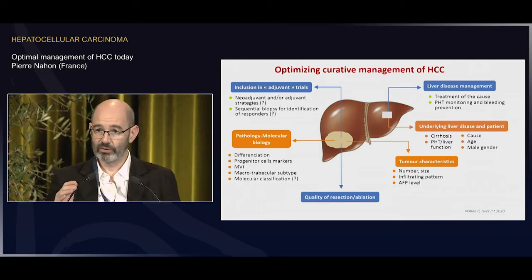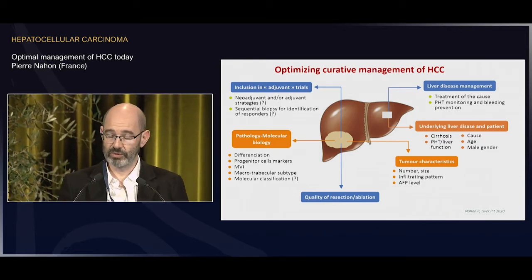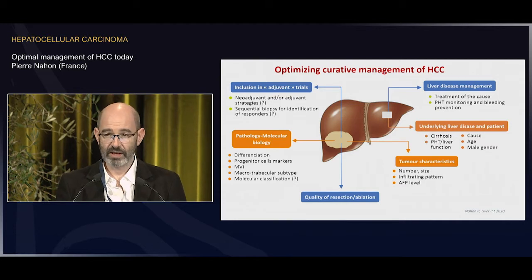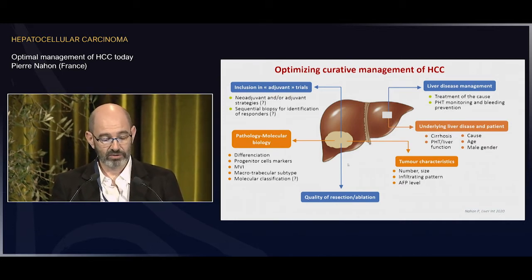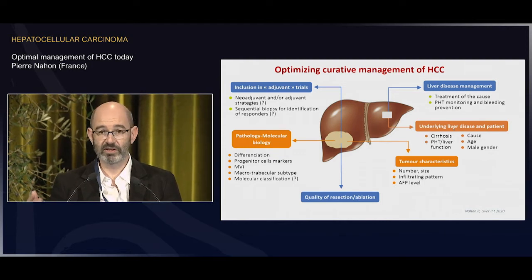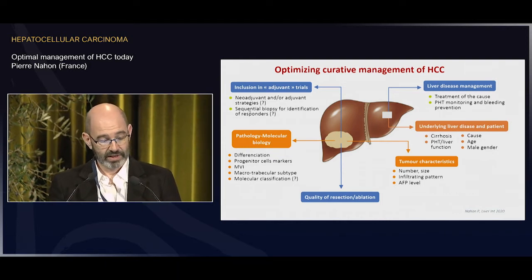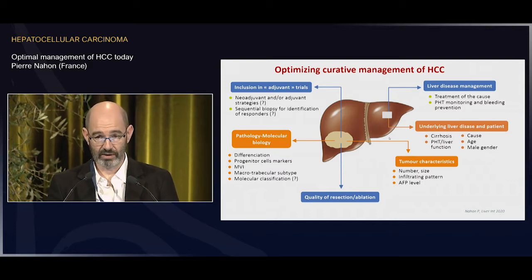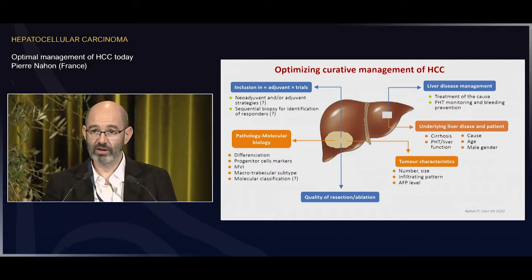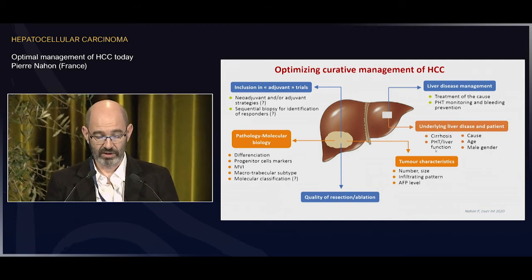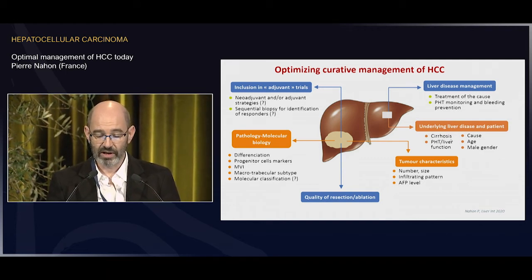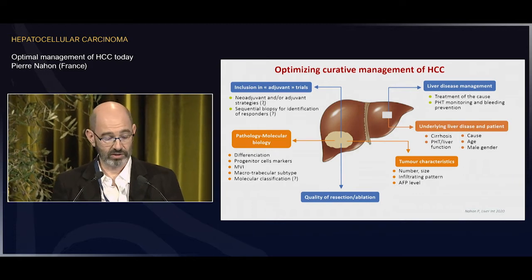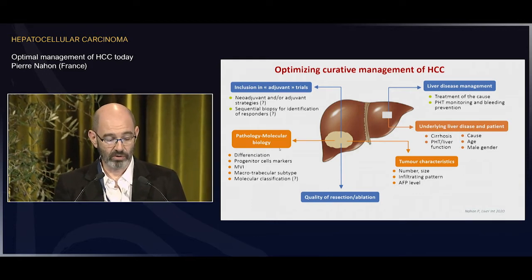If we look at what we can do for optimization of treatment in the curative setting, you can see on this cartoon that you can consider factors related to the tumor, the patient itself, or the liver. In orange, I highlighted the factors you cannot act upon — you can only consider them to refine the prognosis — such as tumor characteristics, the underlying liver disease, and characteristics of the patient. I will develop some more about biology.